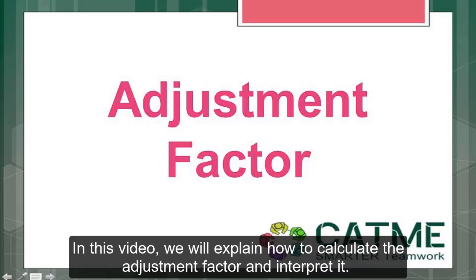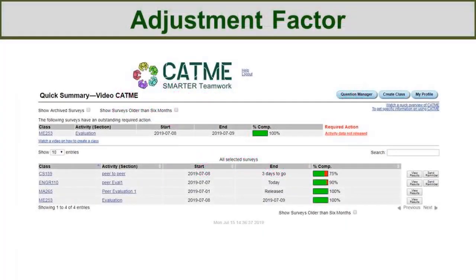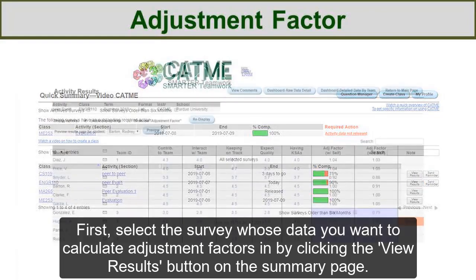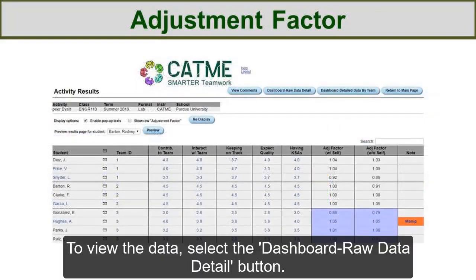In this video, we'll explain how to calculate the adjustment factor and interpret it. First, select the survey whose data you want to calculate adjustment factors in by clicking the View Results button on the Quick Summary page. To view the data, select the Dashboard Raw Data Detail button.